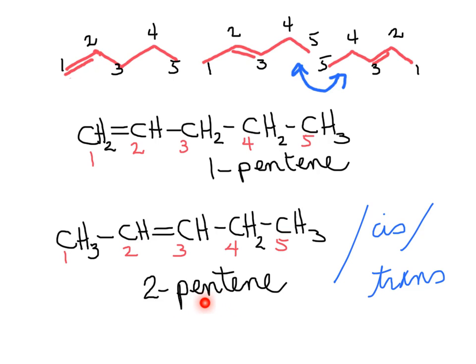Five carbons long is pentene because of the family name. But because we have two hydrogens between carbon two and three — so these two carbons are bonded to hydrogens — we can have cis and trans isomers for 2-pentene. We can have a cis-2-pentene where the two hydrogens are towards the same side, or a trans-2-pentene when the two hydrogens are on opposite sides.